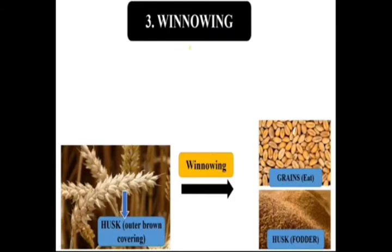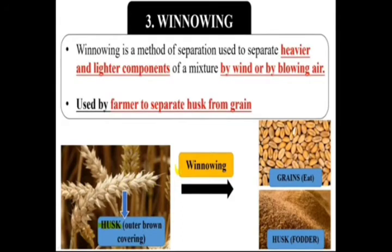The next method is winnowing. Before going to winnowing, did you ever see husk? Husk is the outer brown covering of the grain which is not edible — it is an unwanted substance. During winnowing we want to separate this husk. Winnowing is a method of separation used to separate heavier and lighter components of a mixture by wind or by blowing air.